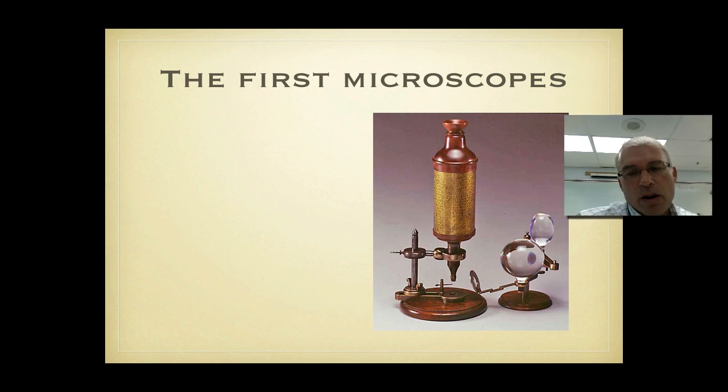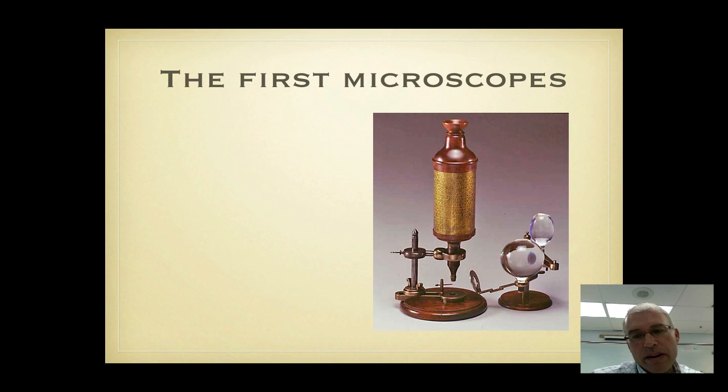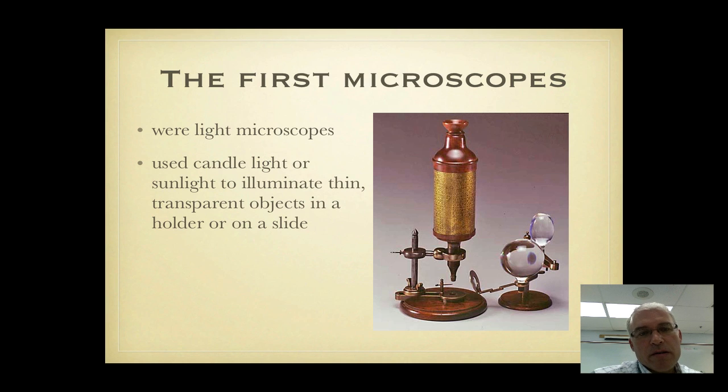The first microscopes, this is a picture here of Robert Hooke's microscope with the lenses to focus light. The first microscopes used light to illuminate a thin sample or a specimen and that means that the specimen had to be very small and transparent, had to be sliced pretty thin if it was a piece of something and it had to be placed in a holder or on a slide.